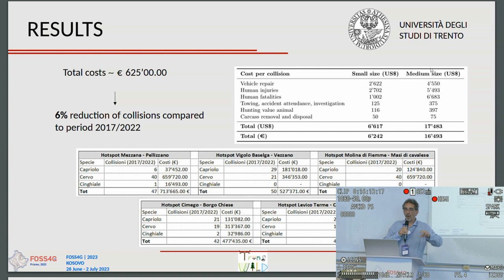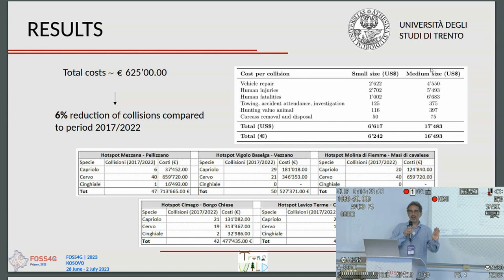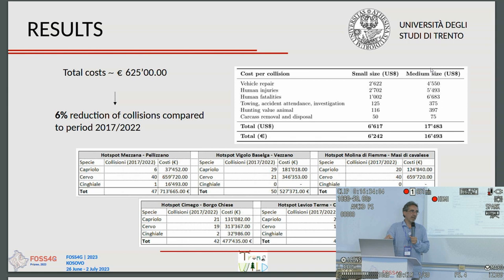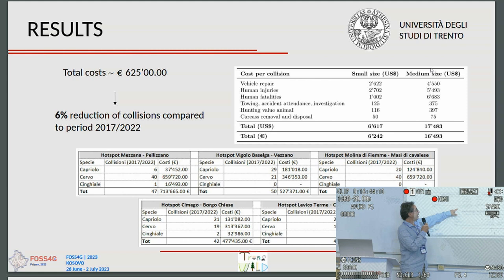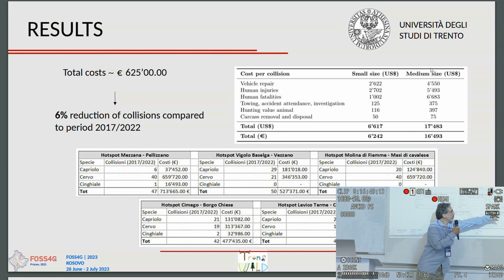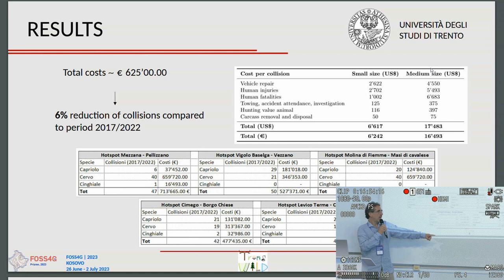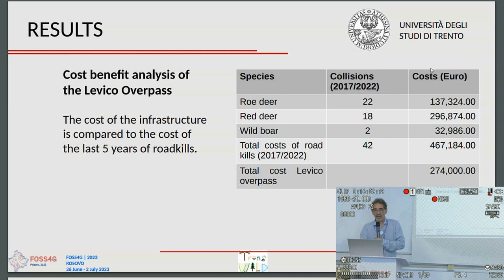The total cost of all five interventions presented is 625,000 euros, and they are expected to reduce collisions by 6% compared to the 2017–2022 period. That may seem a low number, but when compared to the cost of collisions — which are 700,000, 500,000, and nearly 800,000 euros across the five different areas — it becomes significant. Focusing specifically on the Levico overpass: the infrastructure cost is around 300,000 euros including bureaucratic costs.